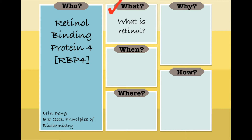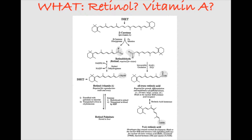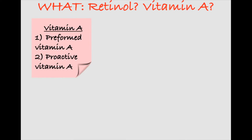What is retinol, and isn't it just vitamin A? Well, actually, retinol is just one derivative of vitamin A. Vitamin A is simply a general name for all retinoids and carotenoids that are found in the human diet. Each retinoid and carotenoid is responsible for a different biological function or structure in the human body. With regards to retinol binding protein 4, we're going to be focusing on the retinoid derivatives of vitamin A.